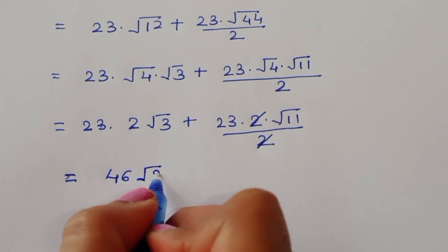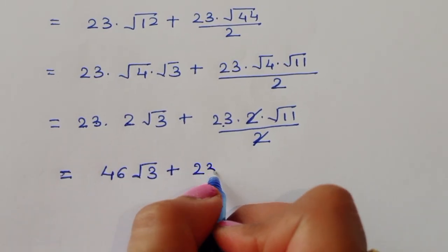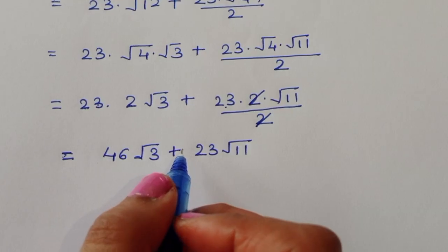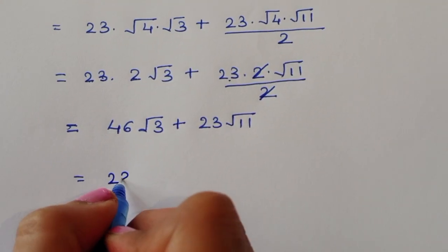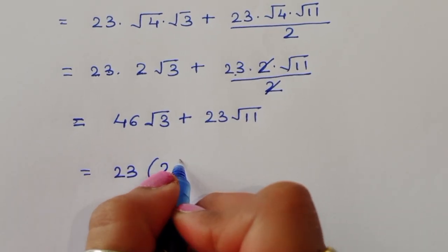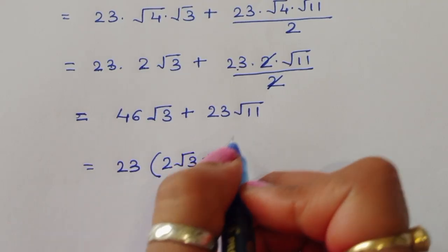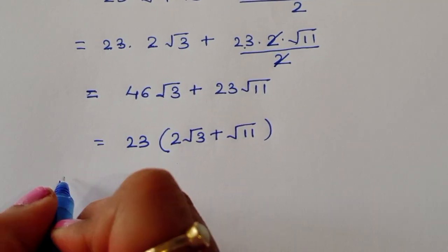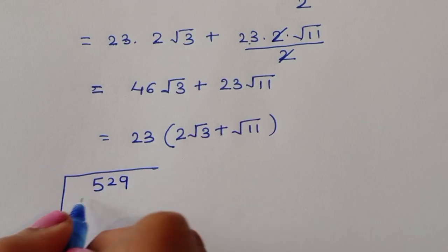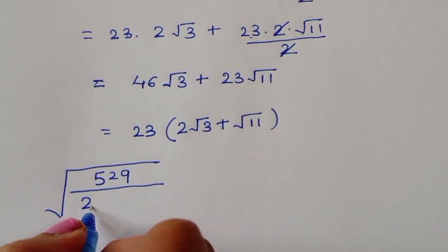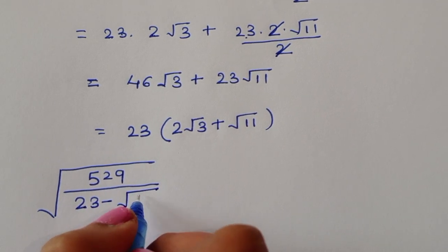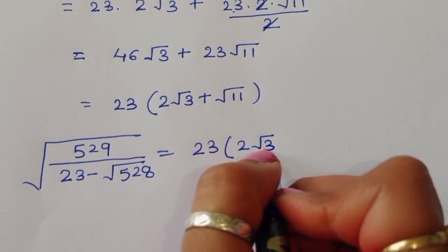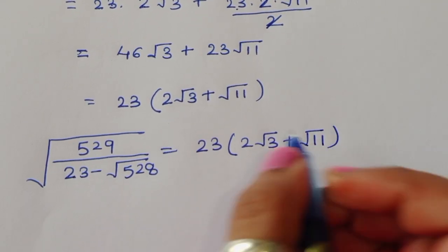This gives us 46√3 plus 23√11. Taking 23 as a common factor, we get 23 times (2√3 plus √11). So the final answer for √529 divided by (23 minus √528) is equal to 23 times (2√3 plus √11). This is the solution.